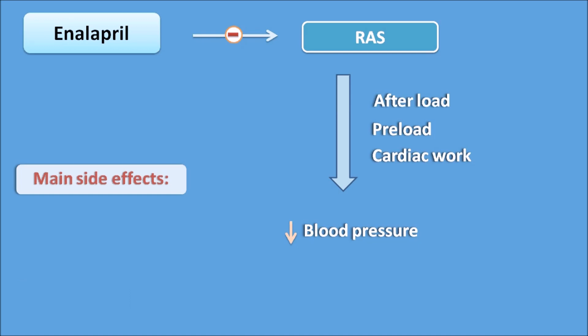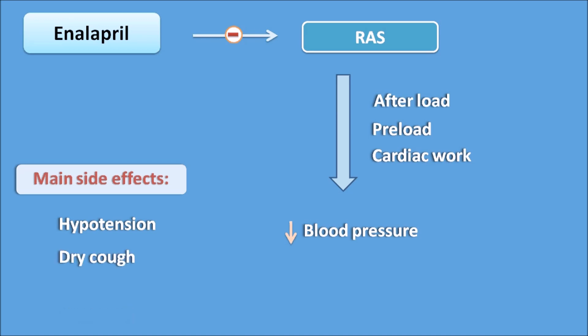The main side effects of enalapril include hypotension, since it is an antihypertensive agent. Another common side effect shared by all drugs with the suffix '-pril' is dry cough. This dry cough is caused by the accumulation of bradykinin due to inhibition of the ACE enzyme.